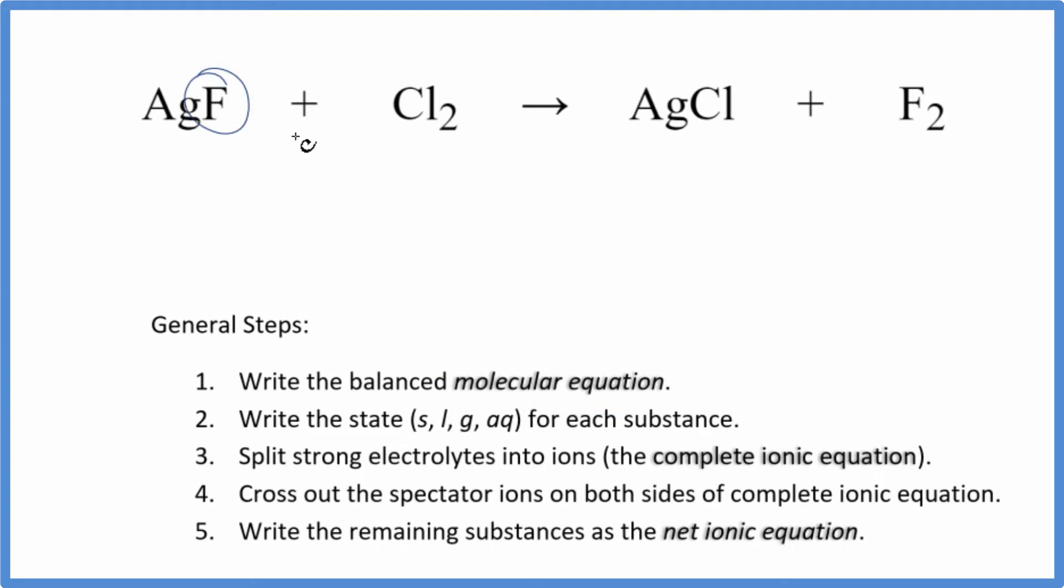So I can see I have one fluorine here and two here. So I'll put a two in front of the AgF. Now I have two silvers here and just one here. So I'm gonna put a two here, fixes the silvers, two chlorines, two chlorines. This is the balanced molecular equation.